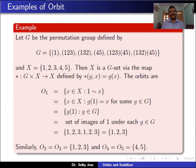Then G acts on X via the action star from G cross X to X, which is defined as star of (g, x) equals g(x). Note that g is a permutation, meaning it is a map, and we are taking star of (g, x) as the image of x under the permutation g in G. So then, what are the orbits? We will see what are the orbits of X.